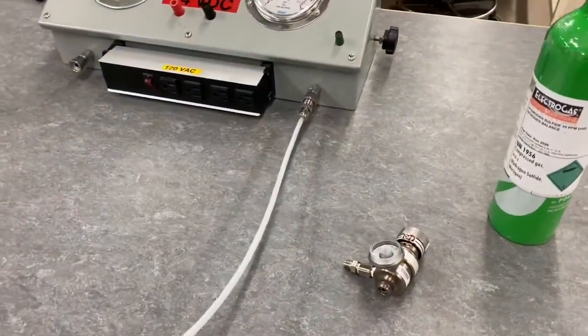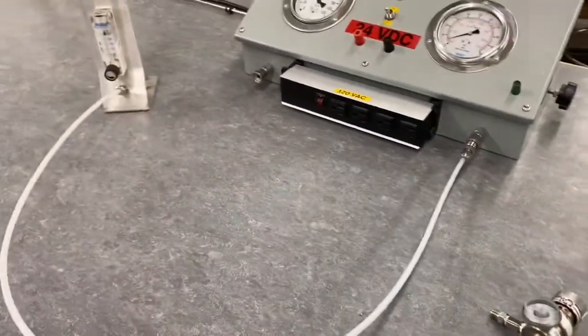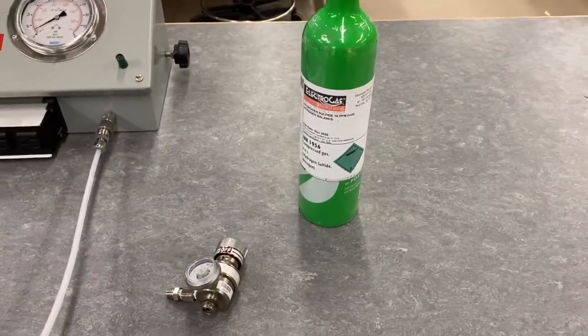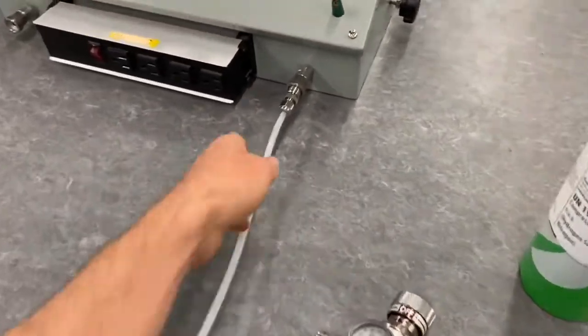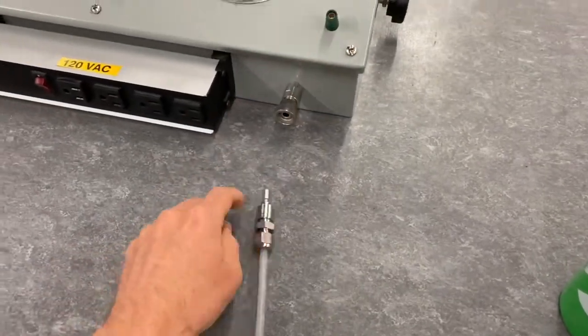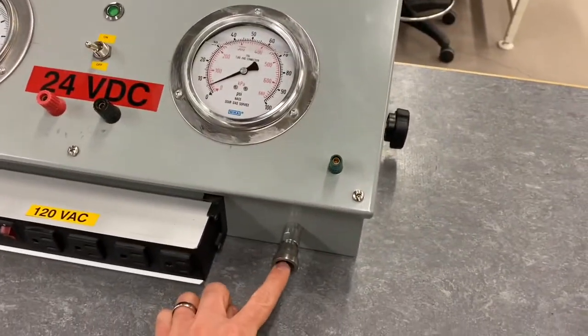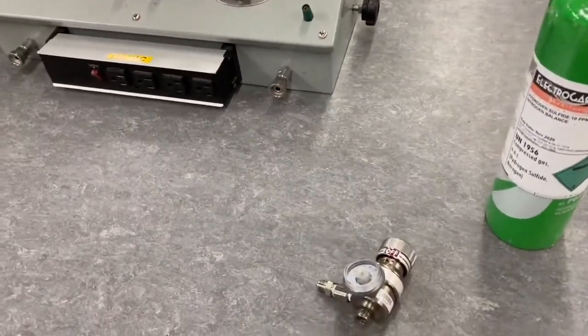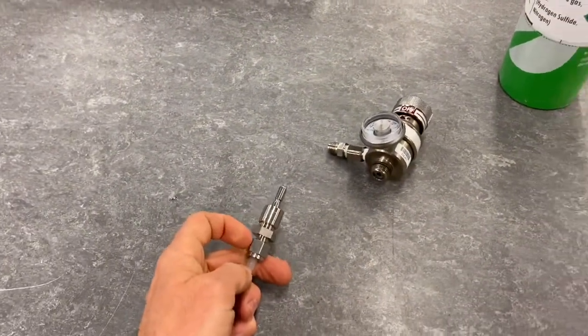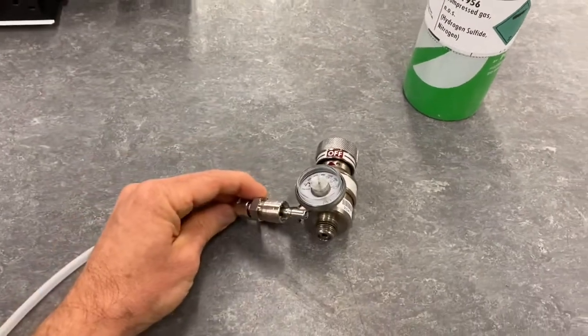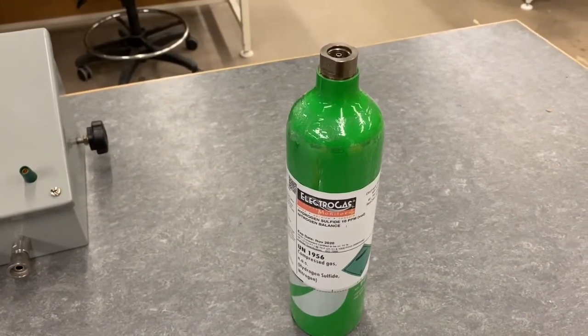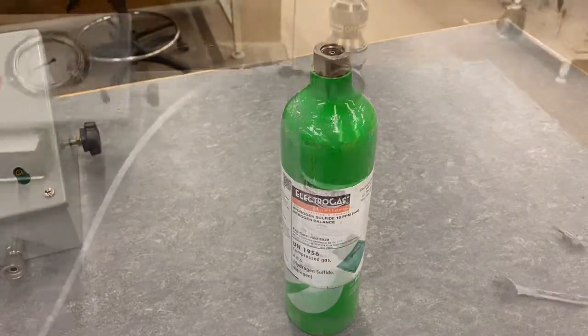When I want to run the toxic gas, the H2S, we can just remove this. We can even leave the pressure on. You can see these quick connect things have a valve in them. We can just pop them out like that. Then I can take the fitting off and connect it to our regulator and put it on our calibration gas bottle and introduce 10 ppm H2S to the sensor.